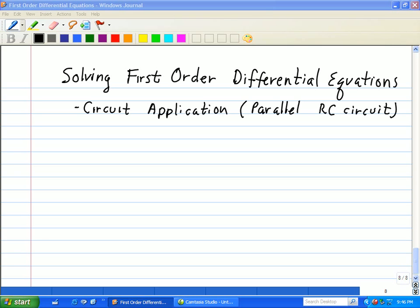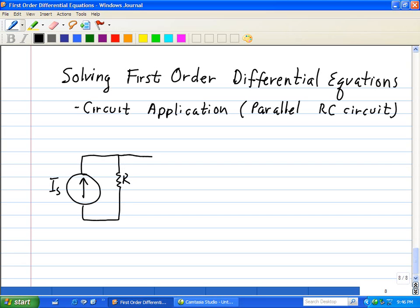In this case, we have a parallel RC circuit. So we'll start off with a current source, I sub s, in parallel with a resistor R and a capacitor C.